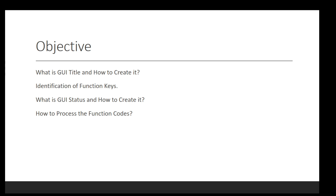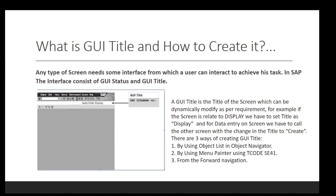The first one is what is GUI title — graphic user interface title — and how we can create it. The second thing is identification of function keys, because it is the most important part of the interface. We will discuss in detail and do some practical examples live in the system. After that we will discuss GUI status and how to create it, and last but not least, how to process the function code, because the backbone of each thing is the function code. So we will discuss function code in detail. Let's move on.